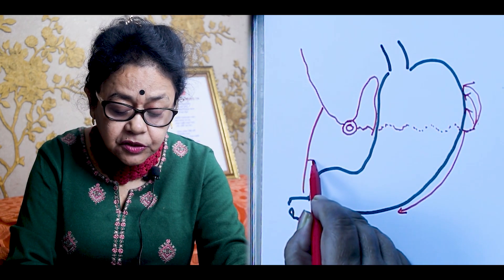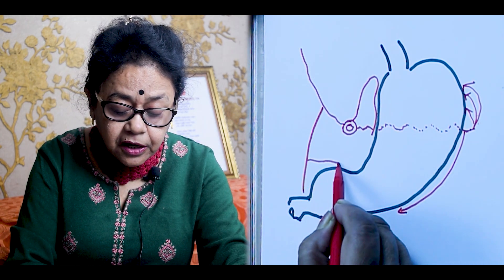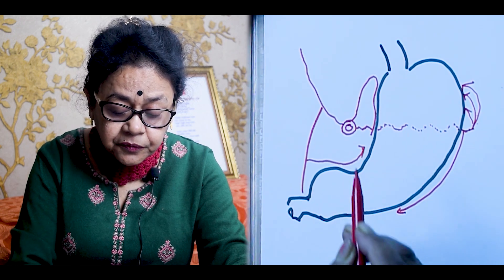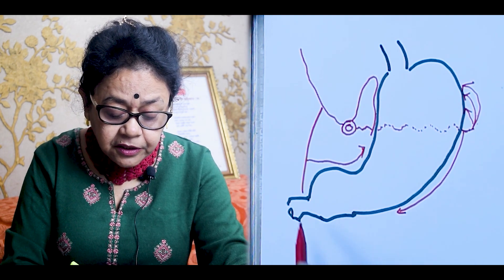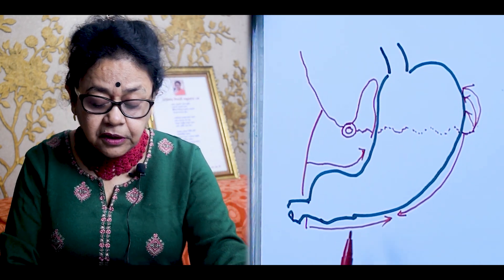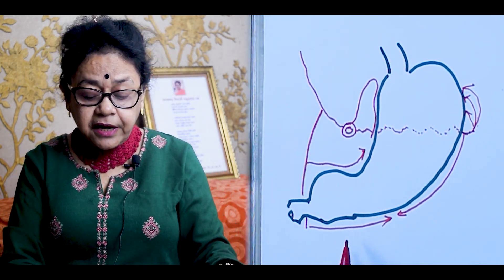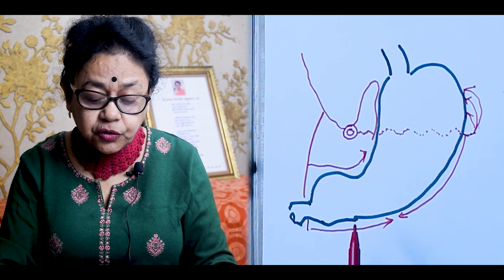From the gastroduodenal artery arises the right gastric artery, and there is anastomosis at the lesser curvature. You will also see from here the gastroduodenal artery gives rise to the right gastroepiploic artery.